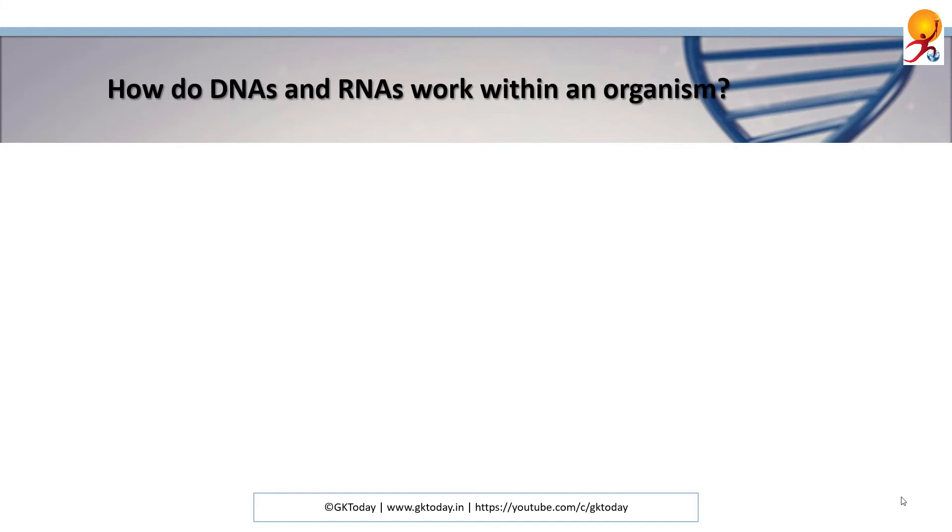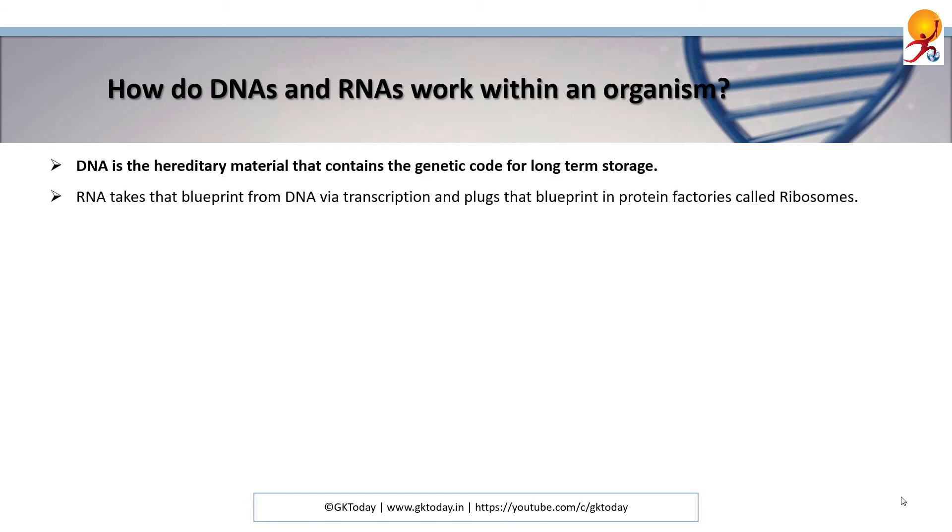How do DNAs and RNAs work within an organism? DNA is the hereditary material that contains the genetic code for long-term storage. RNA takes this blueprint from DNA via transcription and plugs that into protein factories called ribosomes. These ribosomes then produce required protein in a process called translation.